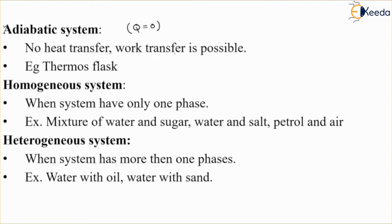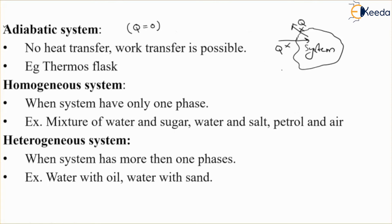In an adiabatic system, work transfer is possible, but heat is neither entering into the system nor coming out from the system. Usually we provide insulation in different types of system — that insulation is defined as the adiabatic condition. Work can be transferred from system to surrounding or from surrounding to system. An example is a thermos flask — neither heat comes out from the thermos flask to surrounding, nor any heat transfers from surrounding to the thermos flask. So this is the example of adiabatic system.